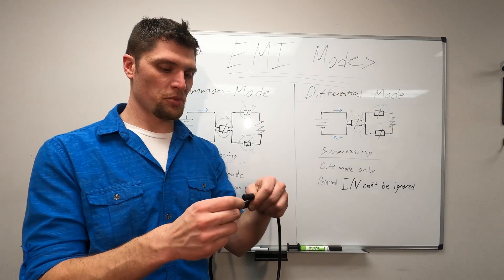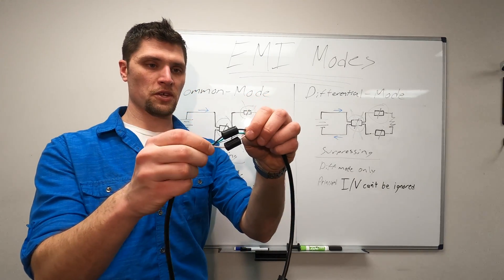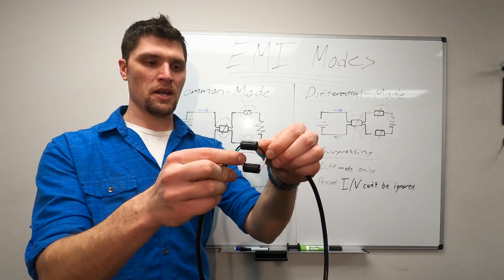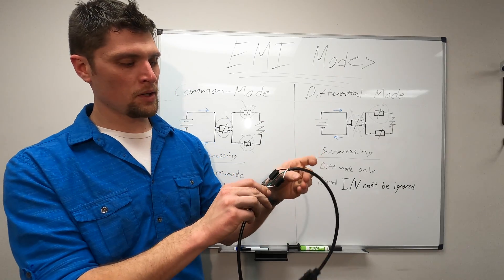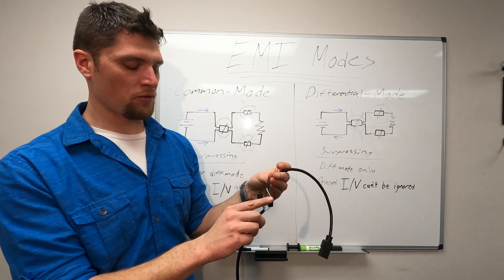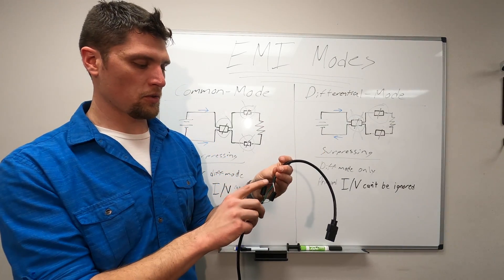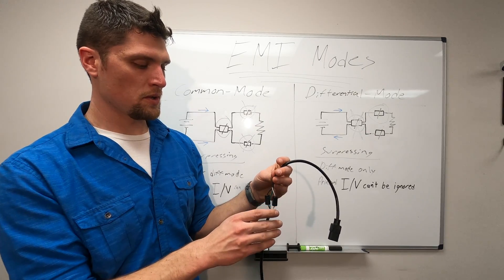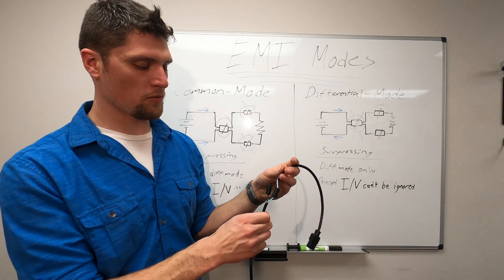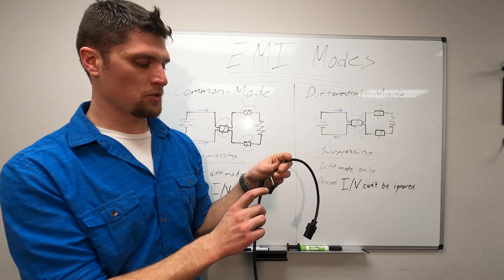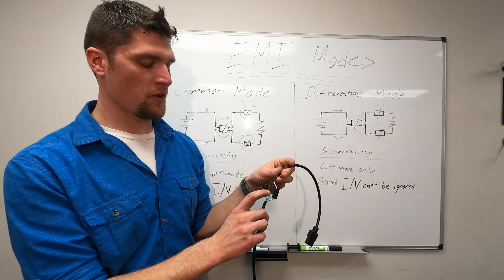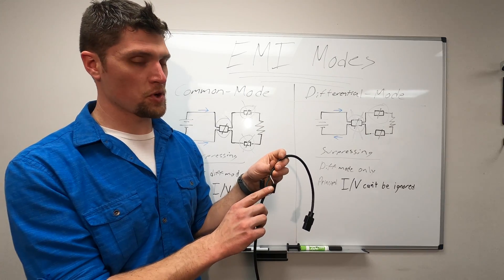Now in differential mode, we have something like this. So the cable has been stripped back and each conductor separated with its own core on there. Now these cores are operating differentially, meaning they will suppress EMI regardless of where it's being conducted down the cables. But we do need to consider some other factors when working in this mode.